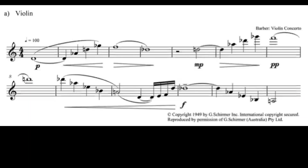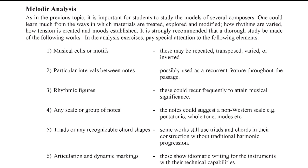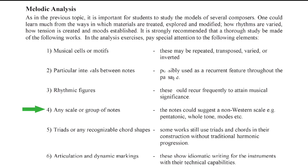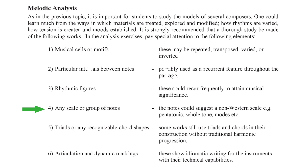If we analyze modern melodies, we will notice that there are certain features which are recurrent. It can be a musical cell or a motive, which can be repeated, transposed, varied, or inverted. There are also specific intervals between notes which can be found, or rhythmic figures which recur, or a group of notes or a particular scale — not a western major or minor scale, but perhaps a pentatonic scale, a whole-tone scale, or a mode. Also, works can be based on triads or chord shapes, but not with the traditional harmonic progression. Last of all, there are interesting articulation and dynamic marks which can show the capabilities of the various instruments.